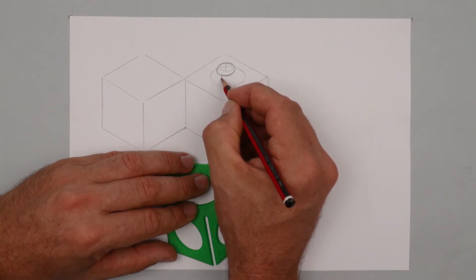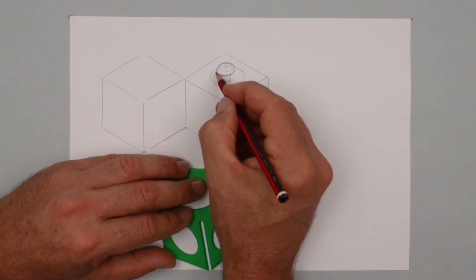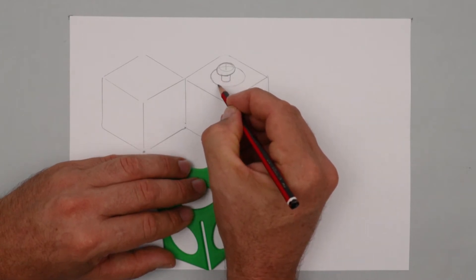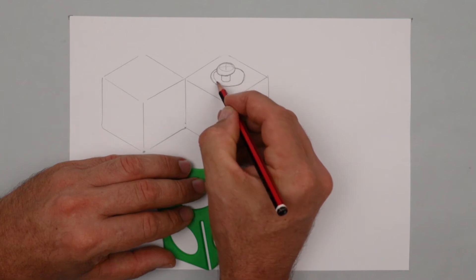Place a couple of marks how wide you'd like the stalk and finish it off with a small ellipse. Now I'm firming or darkening in a little bit more of the detail.